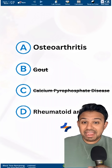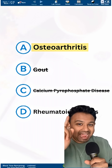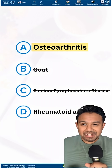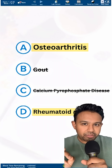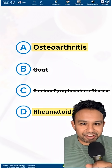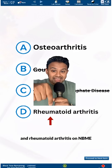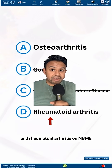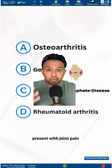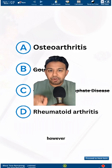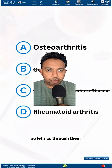You're on the USMLE and you're stuck between answer choice A, osteoarthritis, and answer choice D, rheumatoid arthritis. How do you tell the difference? Both osteoarthritis and rheumatoid arthritis on NBME questions present with joint pain. However, there are some key nuances, so let's go through them.